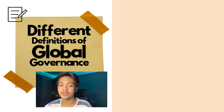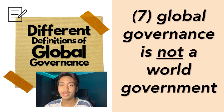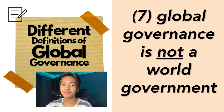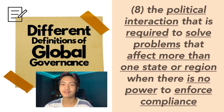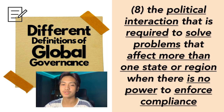Global governance is not a singular system that governs the whole world, but the various systems of global governance have similarities, which is why it can be said that global governance is not a world government. In the book entitled Modern Organizational Governance, global governance pertains to the political interaction required to solve problems that affect more than one state or region when there is no power to enforce compliance. This definition can be taken in the context of various state governments having legitimate monopoly on the use of force and the power of enforcement.